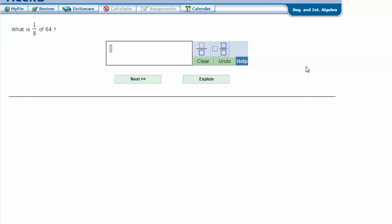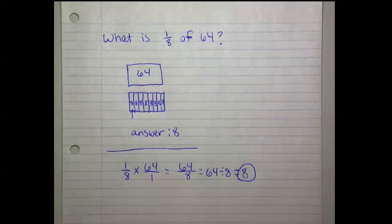What is 1/8 of 64? Here are my notes. What is 1/8 of 64? 64. So this is 64 broken up into strips of 8. 8 strips of 8. And one of those is just 8. So 2/8 would be 16, 3/8 would be 24. But 1/8 is just 8.